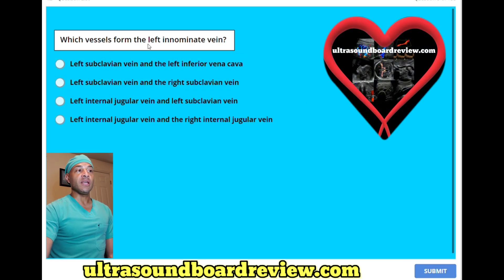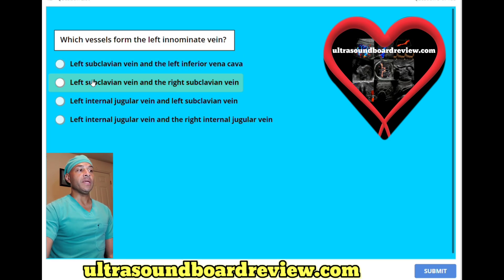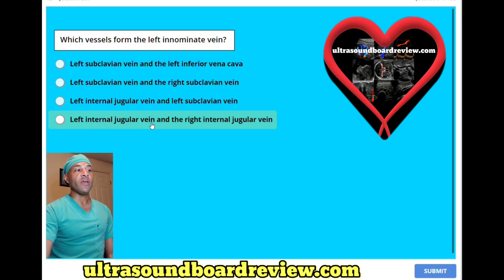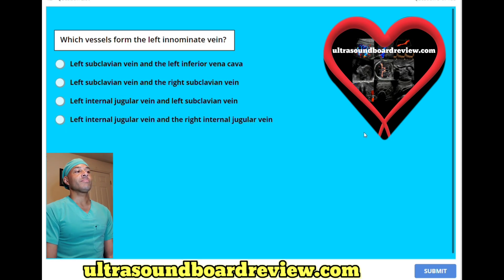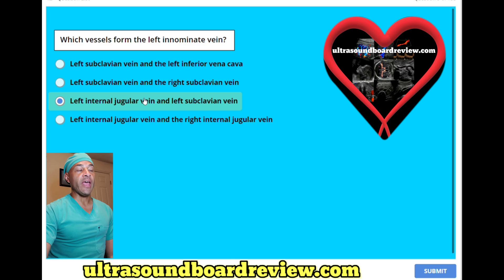Which vessel forms the left innominate vein? A, left subclavian vein and the left inferior vena cava; B, left subclavian vein and the right subclavian vein; C, left internal jugular vein and the left subclavian vein; or D, the left internal jugular vein and the right internal jugular vein? The answer is C, the left internal jugular vein and the left subclavian vein.